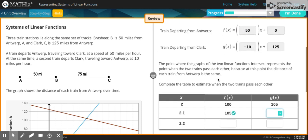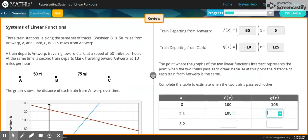And then you do negative 10 times 2.1 plus 125. Which equals negative 21. So if you're subtracting from that, that would give you 104.